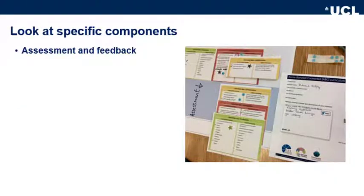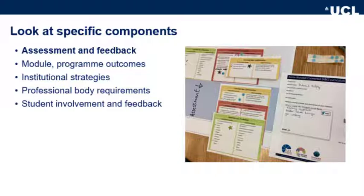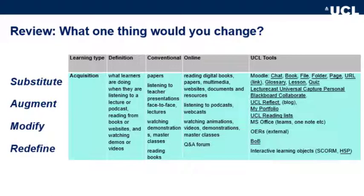Once you have the storyboard, there's a lot you can do with it. We look at assessments and feedback, using stars and stickers to represent where these occur in the student journey. Module and program outcomes are very important — we can map against them, against institutional strategies such as UCL's Connected Curriculum, or professional body requirements. Students can be involved in designs and student feedback can be incorporated during module review. There's also a chance to look at analytics and data, and we're really interested in thinking carefully about the online-offline mix. You don't have to redesign a whole module — sometimes it's just parts people want to change: substituting activities, augmenting, modifying, or redefining them.